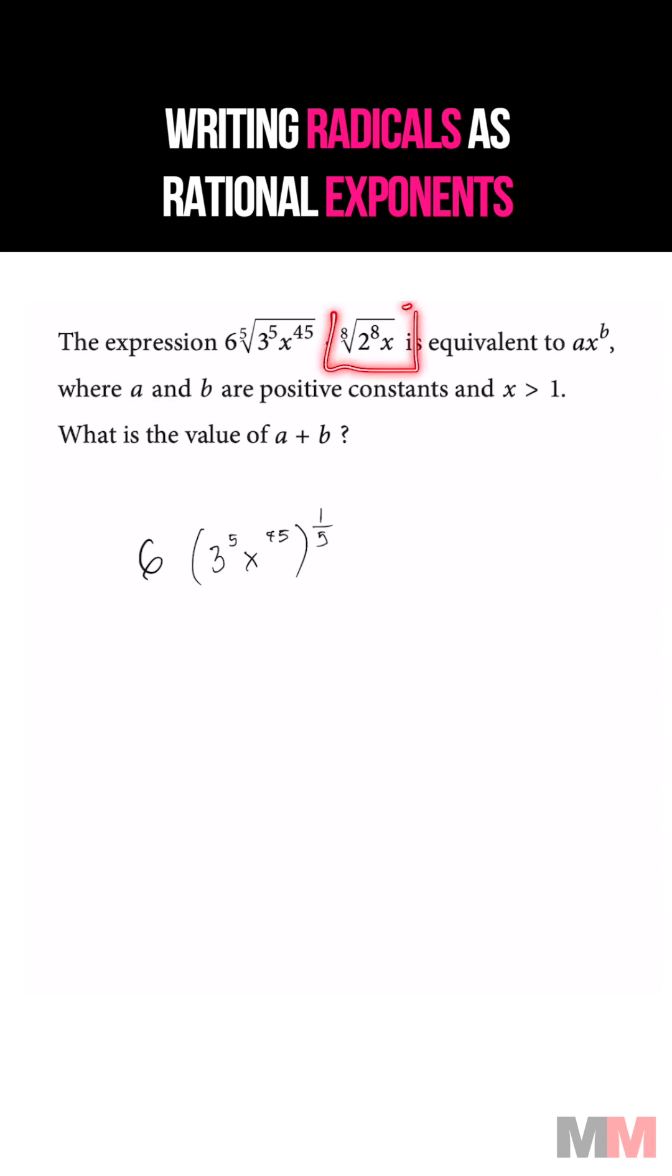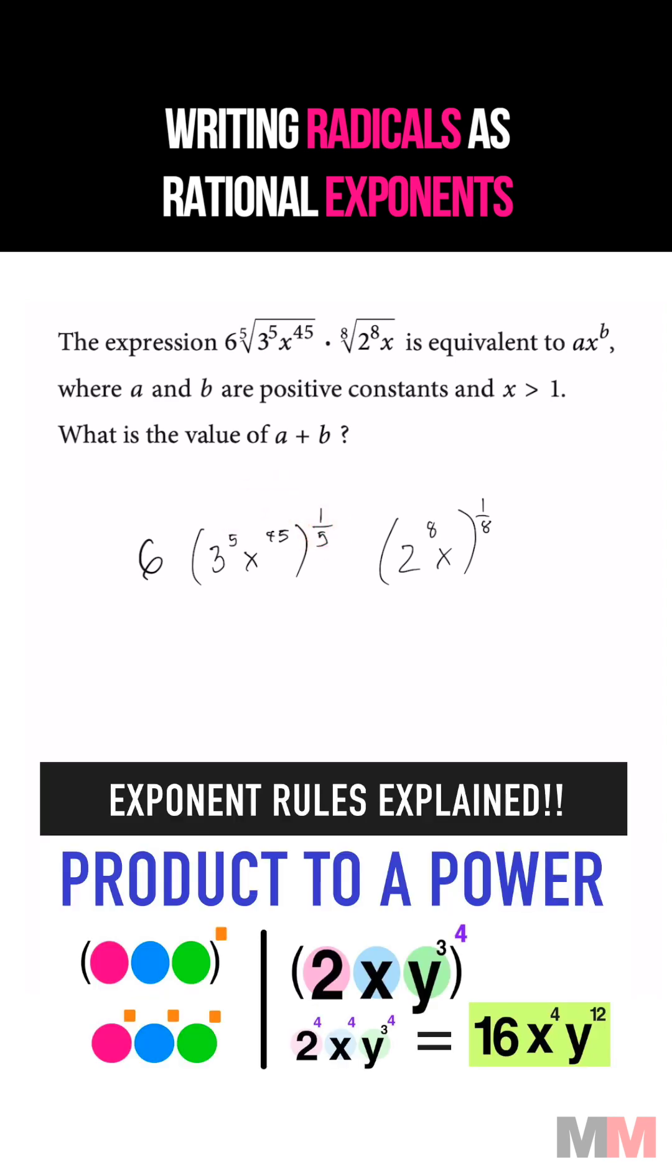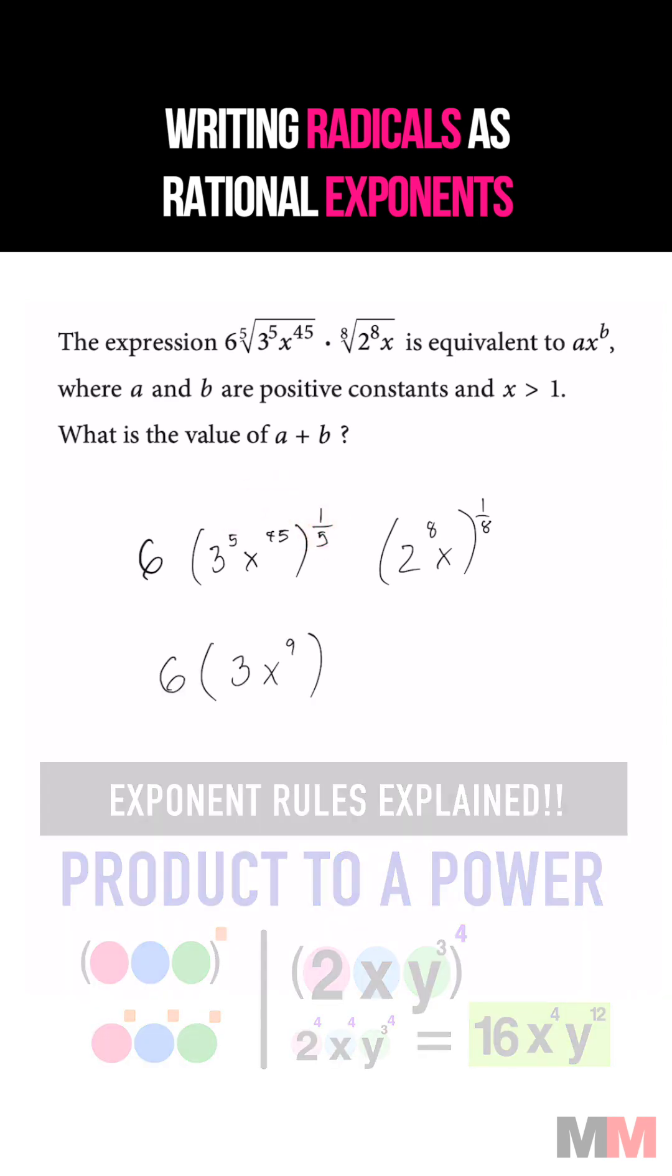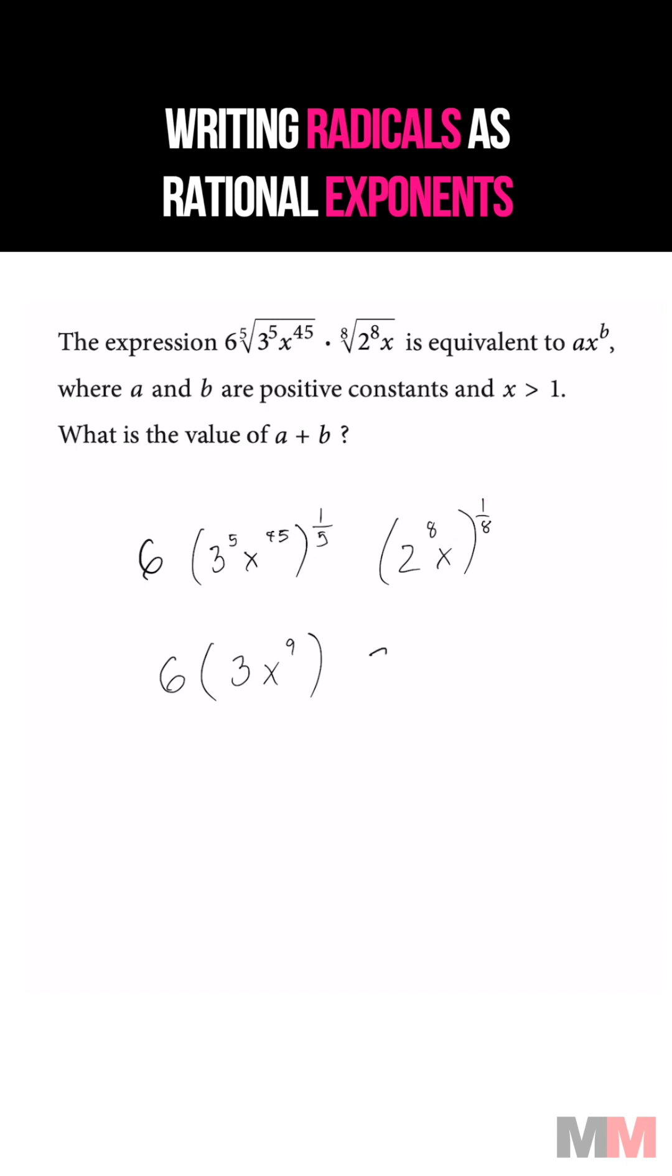Now let's do the same thing for this expression, and that's going to be raised to 1 over 8. If we got an exponent on the outside, multiply that to each exponent on the inside. Doing the same thing for the second expression, you will get this.